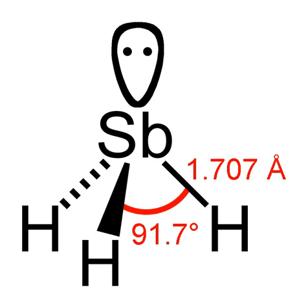As stibine is very similar to arsine, it is also detected by the Marsh test. This sensitive test detects arsine generated in the presence of arsenic. Developed around 1836 by James Marsh, it is based on treating a sample with arsenic-free zinc and dilute sulfuric acid. If the sample contains arsenic, gaseous arsine will form. The gas is swept into a glass tube and decomposed by heating at around 250–300 degrees Celsius. Arsenic is indicated by a deposit in the heated part; a black mirror deposit in the cool part indicates the presence of antimony.